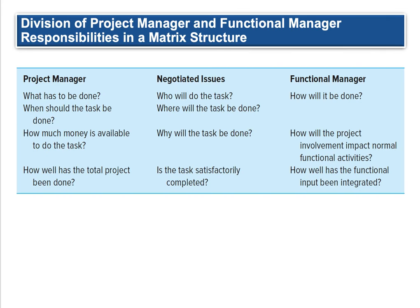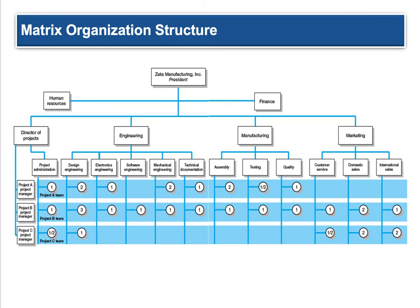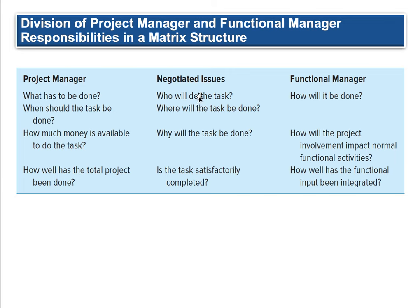Division of responsibilities between the project manager and functional manager in a matrix structure: the project manager asks what has to be done, when should it be done, how much money is available, and how well has the total project been done. Negotiated issues include who will do the tasks. The functional manager asks how it will be accomplished, where it should be done, why the task justifies spending the money, and how project involvement will impact normal functional activities. Functional managers handle the more routine organizational functions; project managers think outside the box. Where they coincide — that's the matrix. The feedback loop is: was the project satisfactory and how well did it integrate into the functional areas?